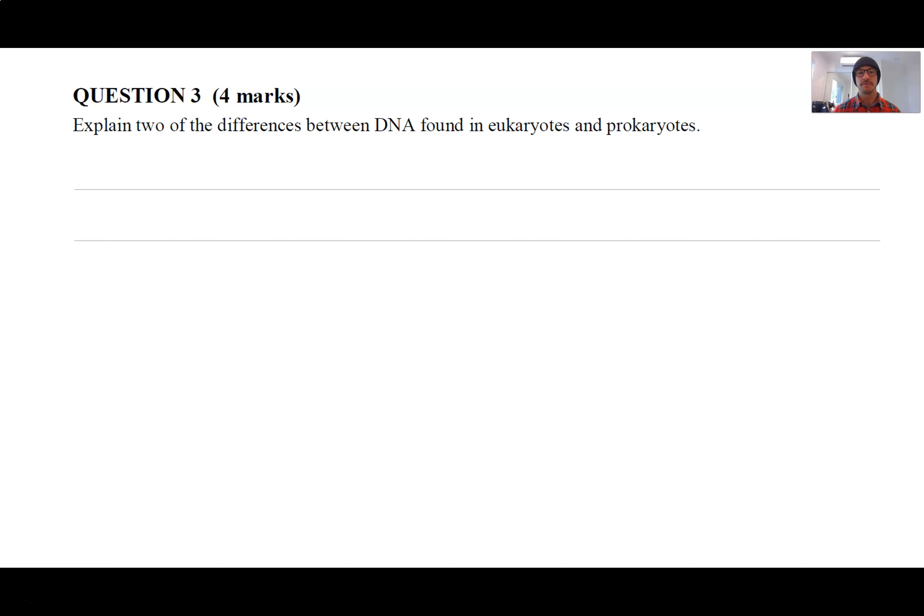So this is a short response question worth four marks, and it is asking you to explain two of the differences between DNA found in eukaryotes and prokaryotes. We didn't talk a lot about this. So to answer this question, you may need to do a bit of research, but come up with two differences. So you get one mark for each, but then you also have to explain, so that's how you get your other two marks. Pause the video here.